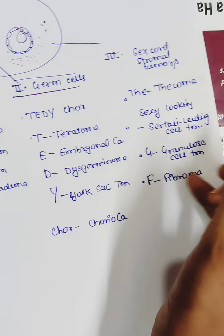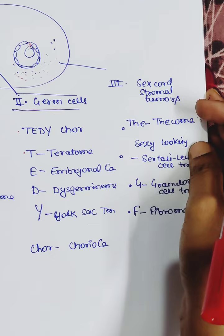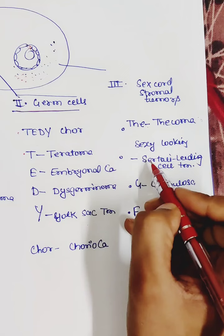The third group is sex cord-stromal tumors. Tumors of this group are the sexy looking girlfriend. The fourth, fibroma. Sexy looking for Sertoli-Leydig cell tumor. G for granulosa cell tumor. And F for fibroma.